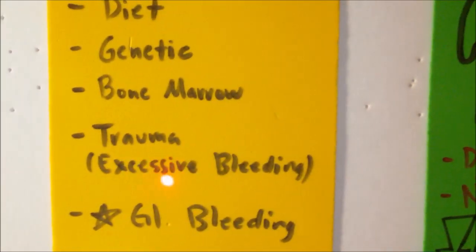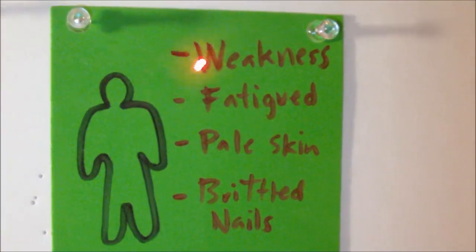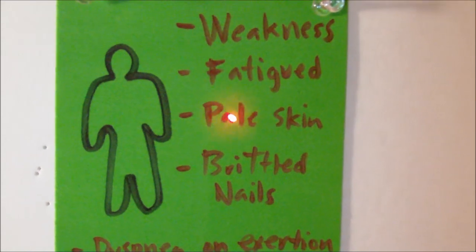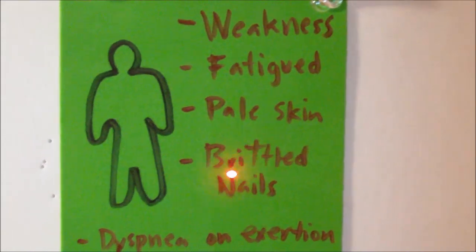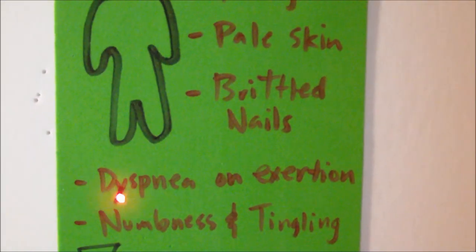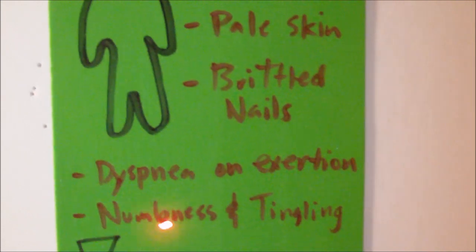Generally, patients who are anemic would show signs of weakness; they would be fatigued and have pale skin and brittle nails. They would have dyspnea on exertion — they get tired really quickly — and they also have numbness and tingling of the extremities.